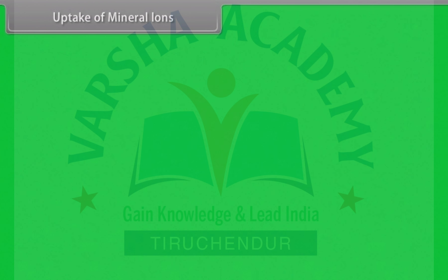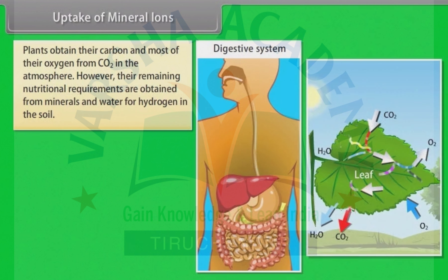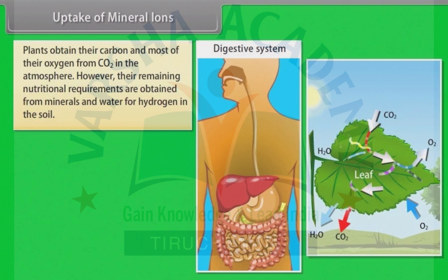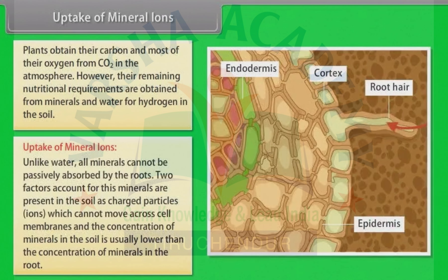As we all know, plants do not have teeth and digestive organs like us. They obtain their carbon and most of their oxygen from CO2 in the atmosphere. However, their remaining nutritional requirements are obtained from minerals and water for hydrogen in the soil. Let us first know how do they uptake mineral ions.